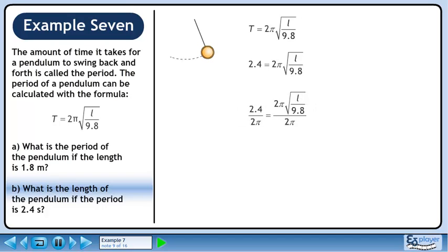Divide both sides of the equation by 2π. The 2π's cancel on the right side.